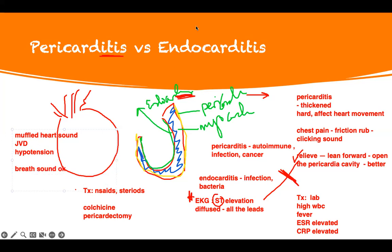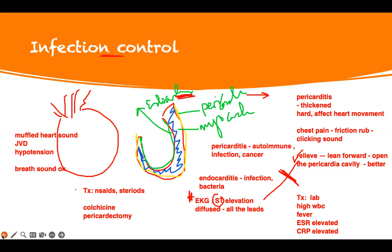What is the diagnosis? Muffled heart sounds, JVD, and narrow pulse pressure — the systolic blood pressure gets closer to the diastolic. They've developed cardiac tamponade. So the major complication of pericarditis is cardiac tamponade.